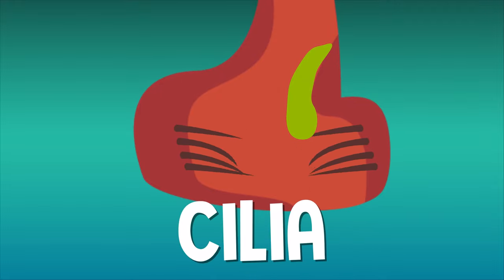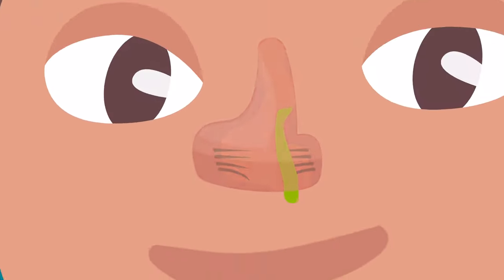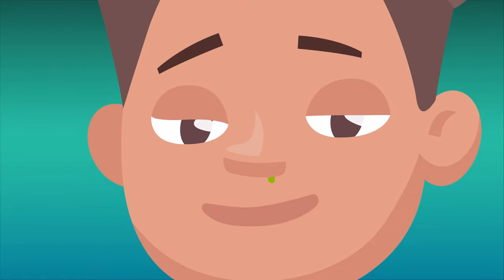Tiny hairs inside your nose, called cilia, help push it further down your nose. Then air starts to dry it out a bit. And before long, the mucus morphs into a booger.